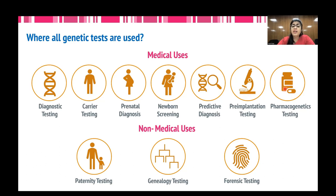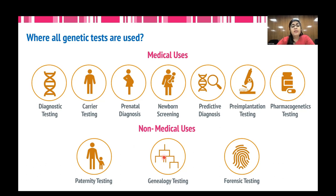Lastly, in pharmacogenetic testing, the genetic determinants of response to certain drugs can be tested. In case of non-medical uses, paternity testing is done to find out if the members of a family are biologically related to each other. Genealogy testing determines the lineage or ancestry of an individual, and forensic testing is more commonly known to identify an individual for legal purposes.